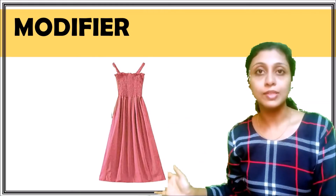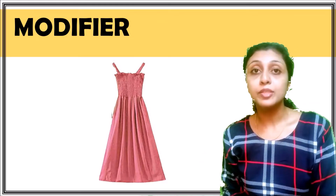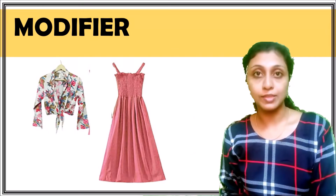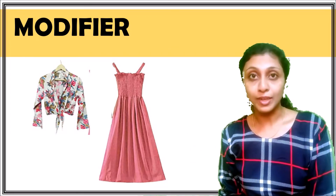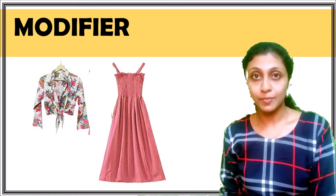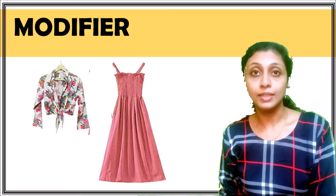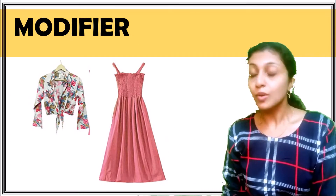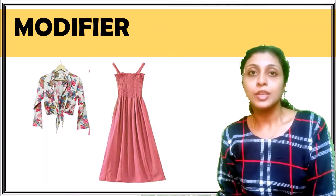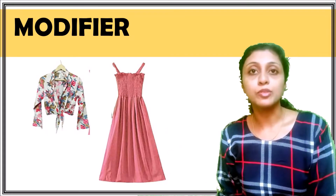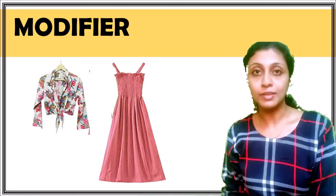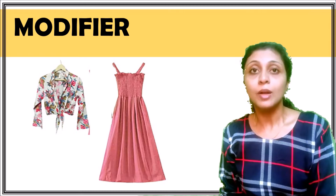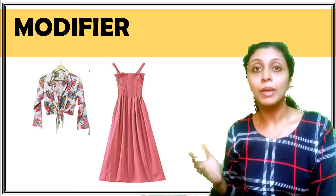I have a dress here — a simple dress. Now I'm going to add a jacket to this dress. What I've done is modified the look of this dress, enhanced it and made it more interesting. So I've modified it with a jacket. If the dress corresponds to the word, then the jacket is the modifier.